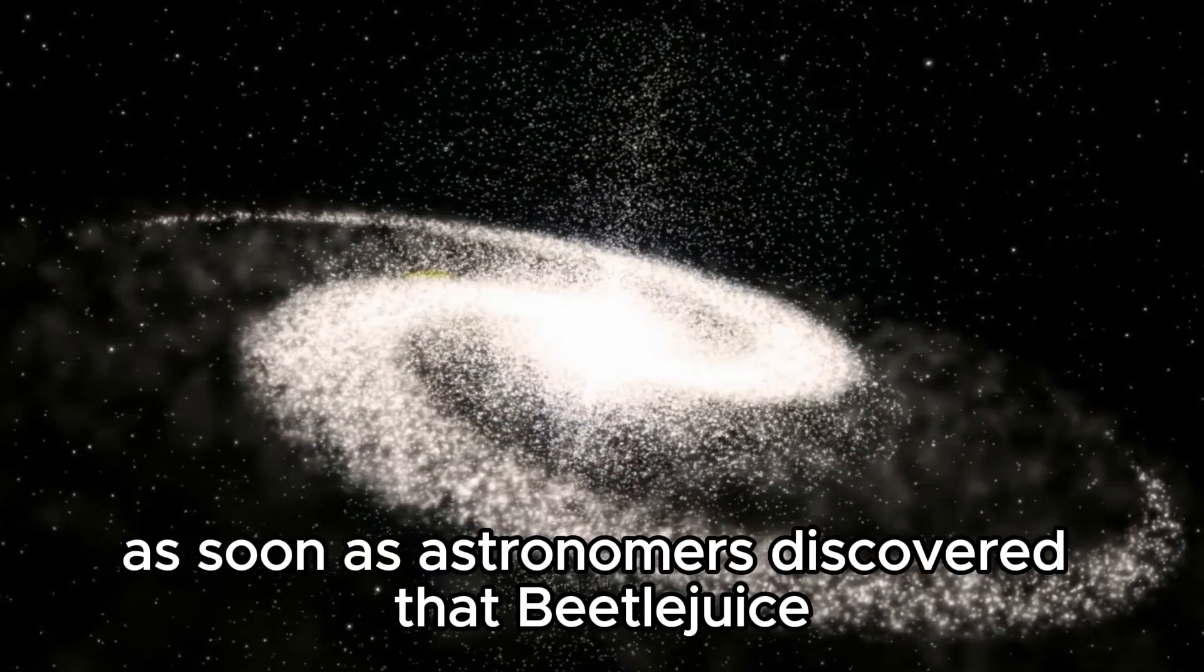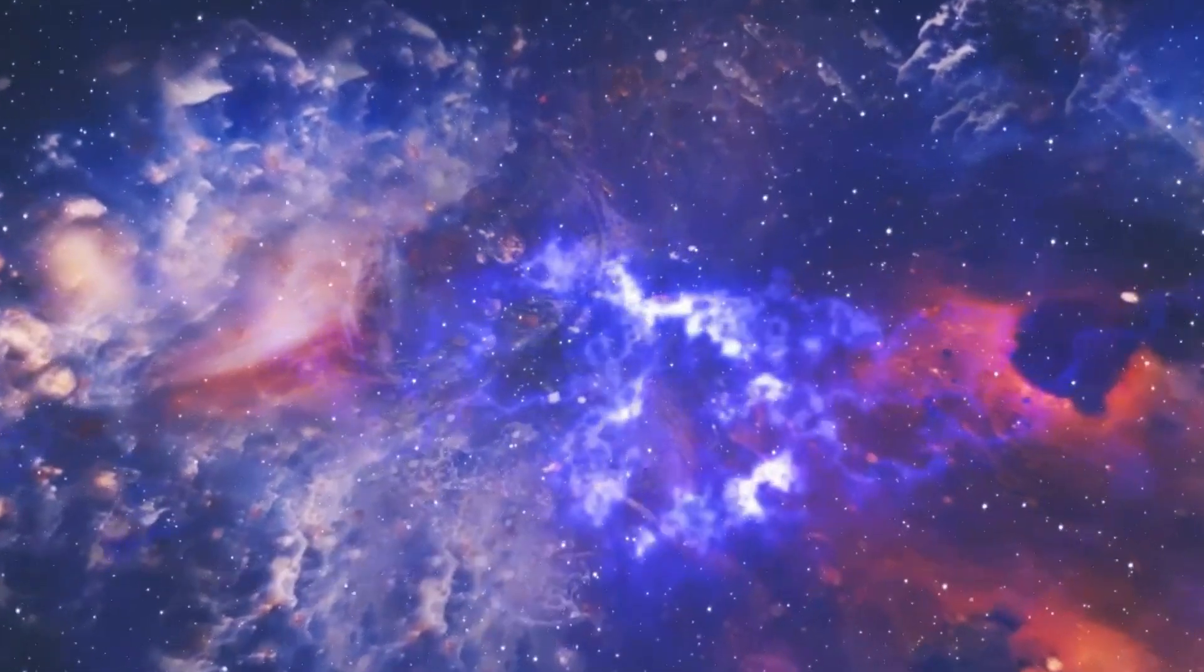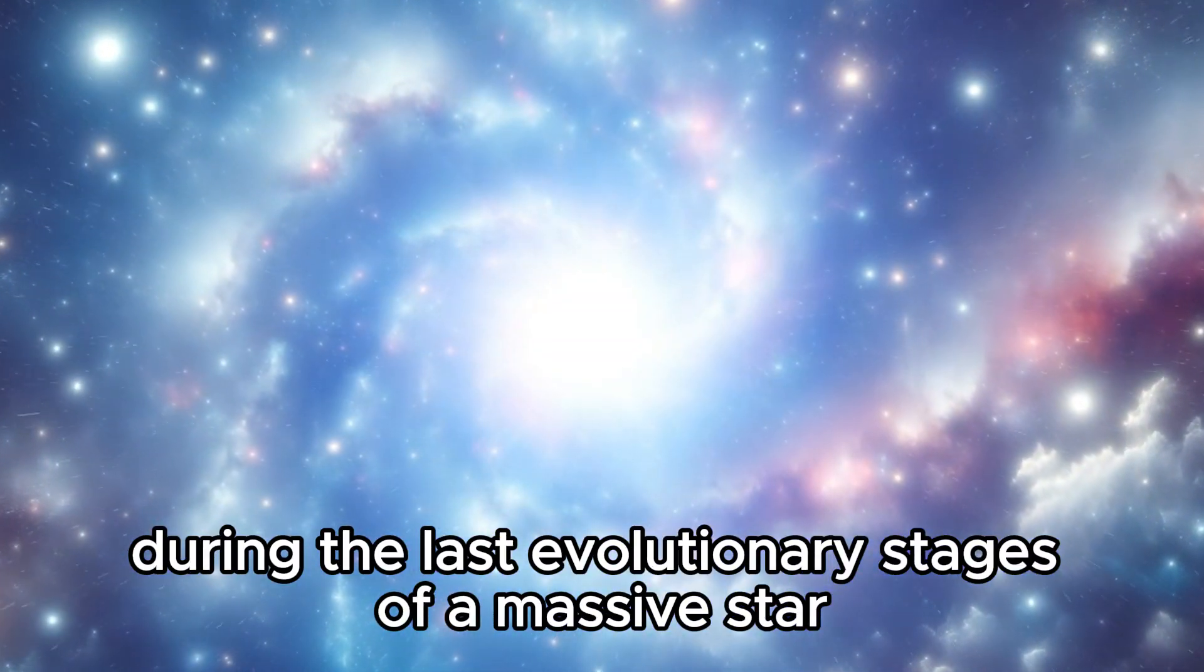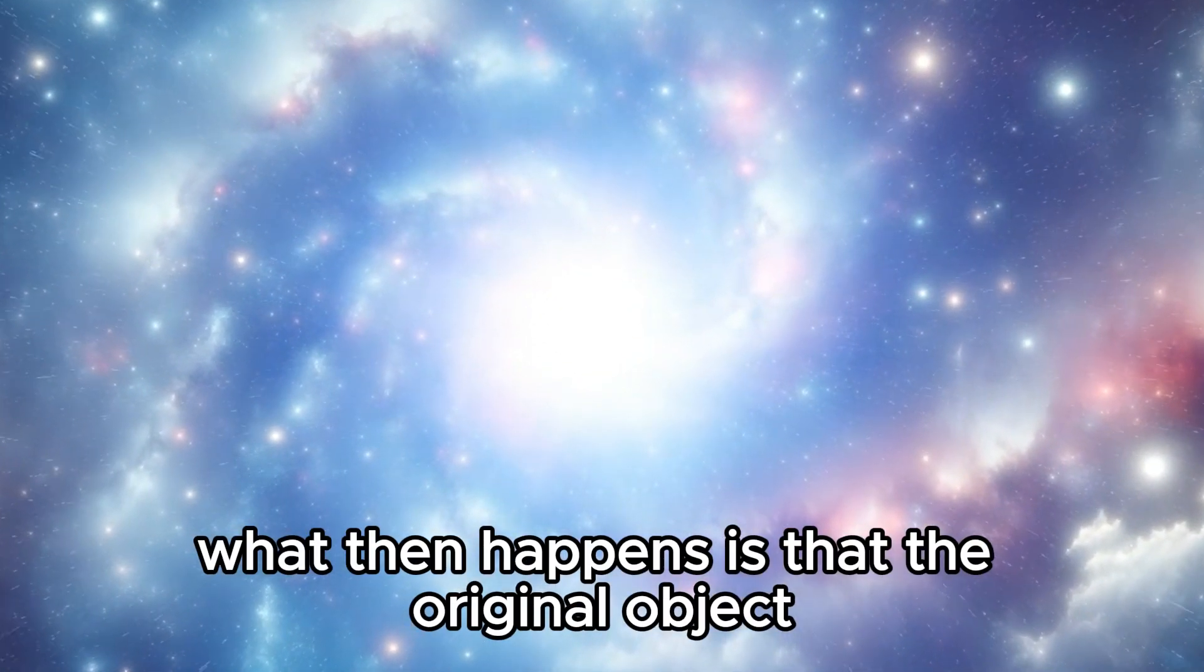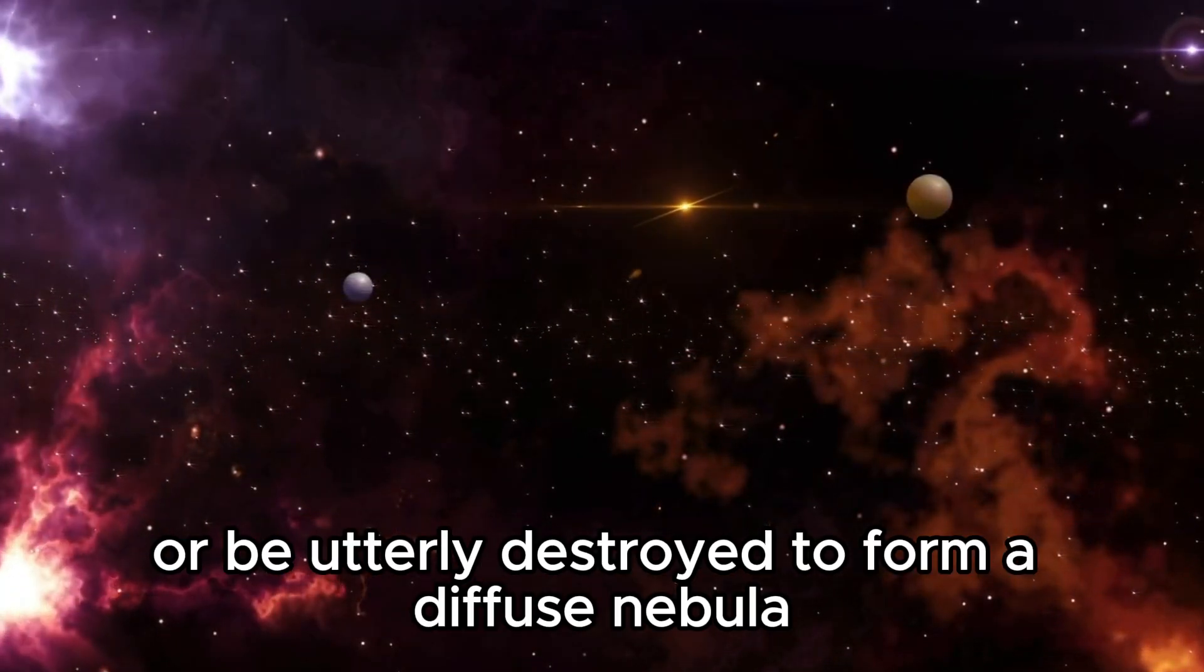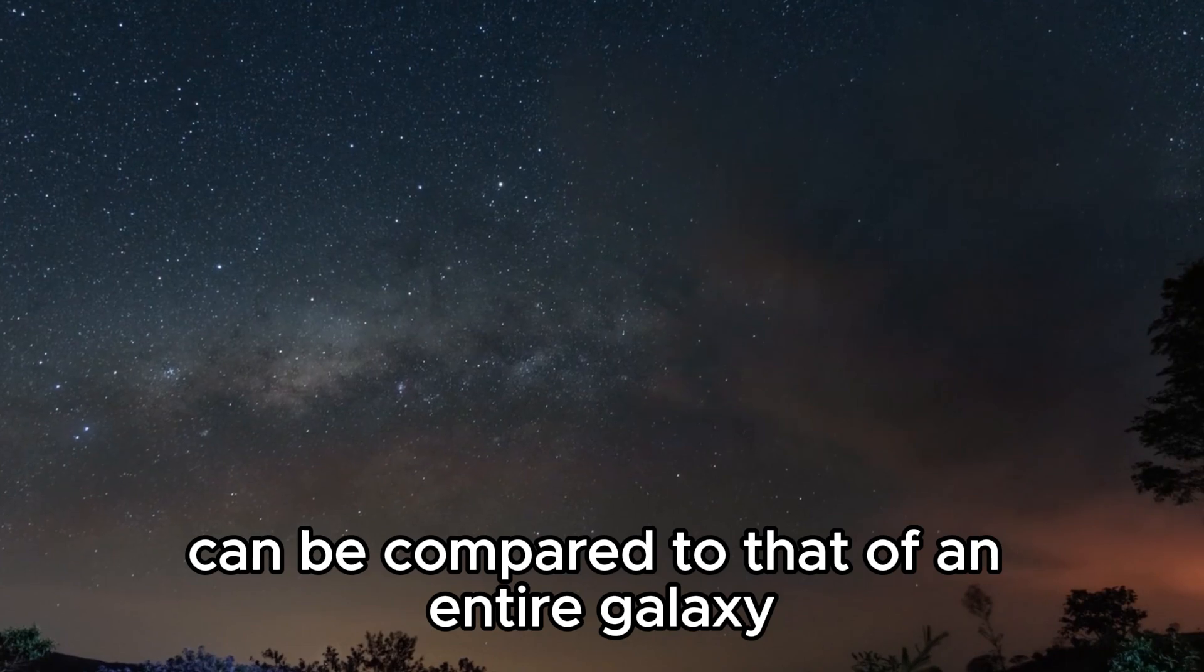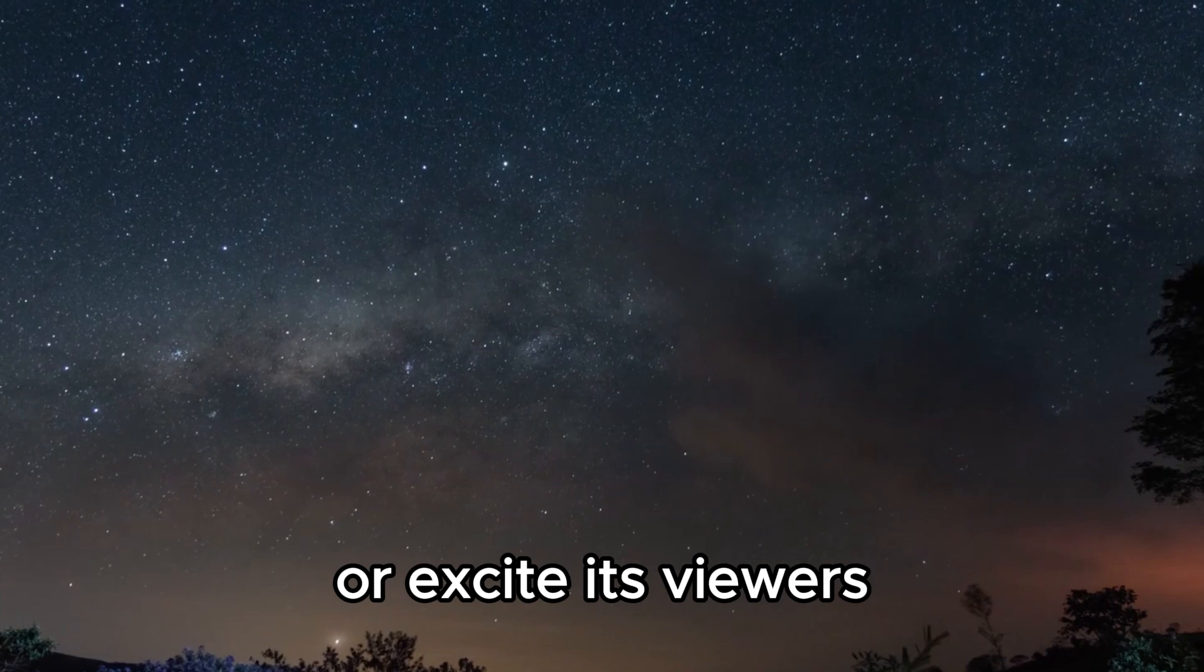As soon as astronomers discovered that Betelgeuse was bound to supernova, the scientific community was on high alert. A supernova is a powerful and luminous explosion of a star. Scientists have explained that a supernova occurs during the last evolutionary stages of a massive star or when a white dwarf is triggered into runaway nuclear fusion. What then happens is that the original object, known as a progenitor, would either collapse into a neutron star or black hole or be utterly destroyed to form a diffuse nebula. If Betelgeuse explodes today, the peak optical luminosity of the supernova can be compared to that of an entire galaxy before fading after several weeks or months. The sheer sight of this event would either scare or excite its viewers.